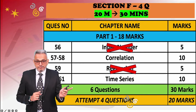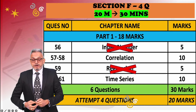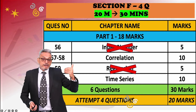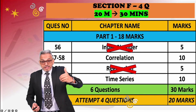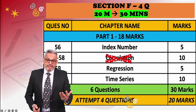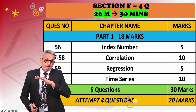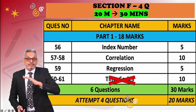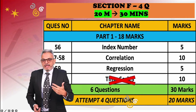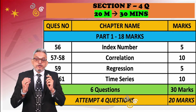For Section F you can attempt 2 long sums from correlation and 2 from time series to complete the 4 questions. Alternatively, if you have difficulty in time series moving average for even number of years, you can leave both time series long sums and instead attempt correlation and other chapters. Various options are available — explore what suits you best. Four questions, 20 marks.